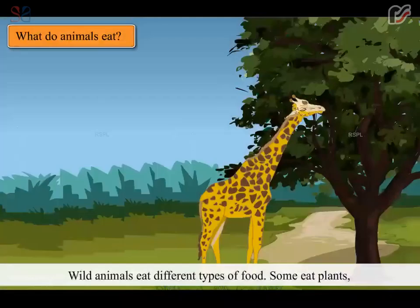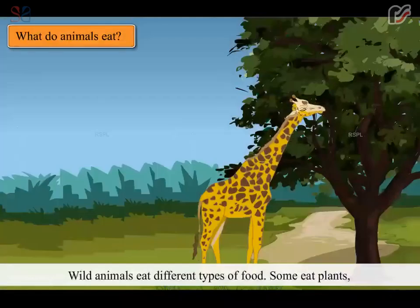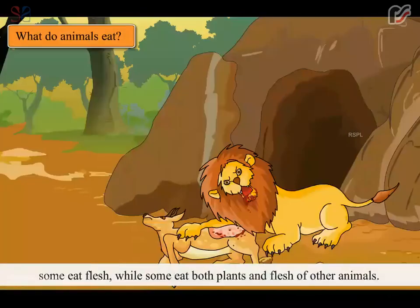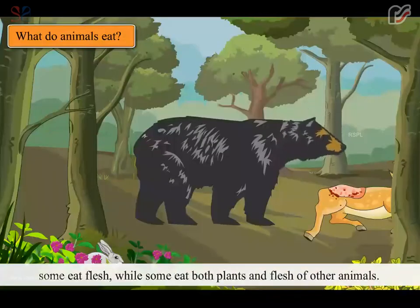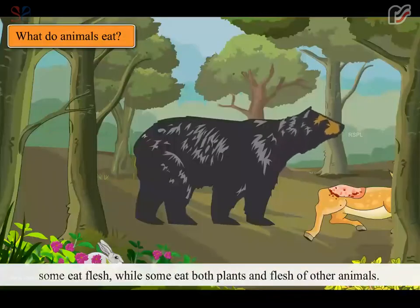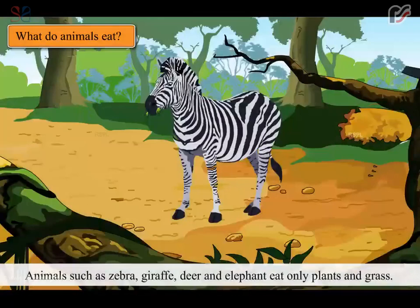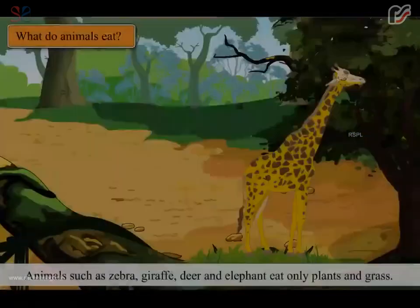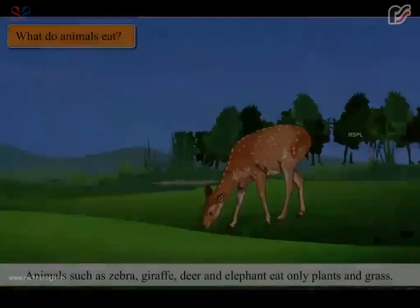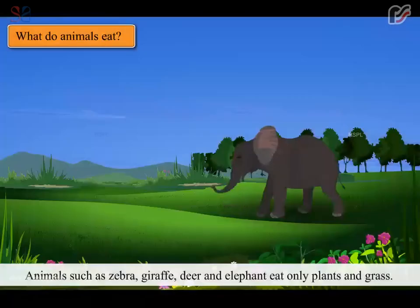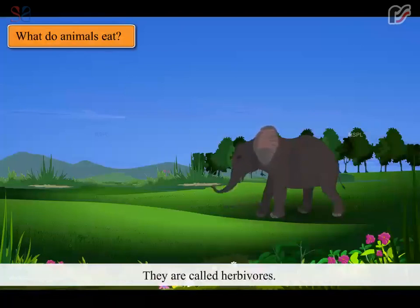Wild animals eat different types of food. Some eat plants, some eat flesh, while some eat both plants and flesh of other animals. Animals such as zebra, giraffes, deer and elephant eat only plants and grass. They are called herbivores.